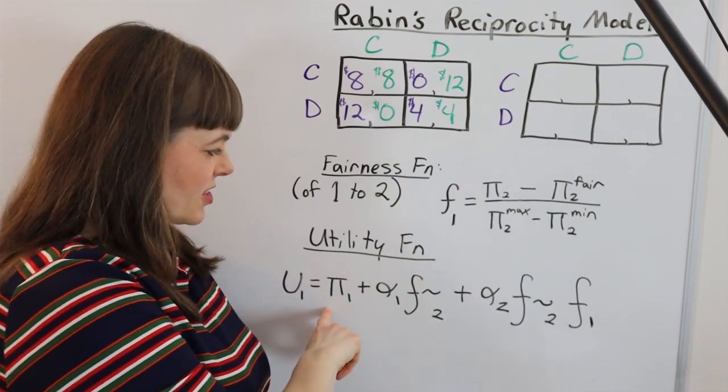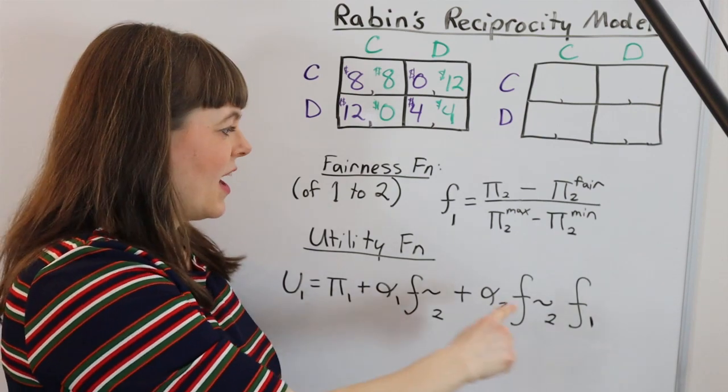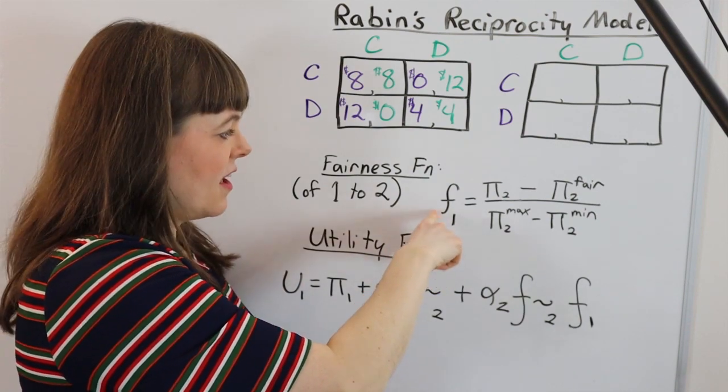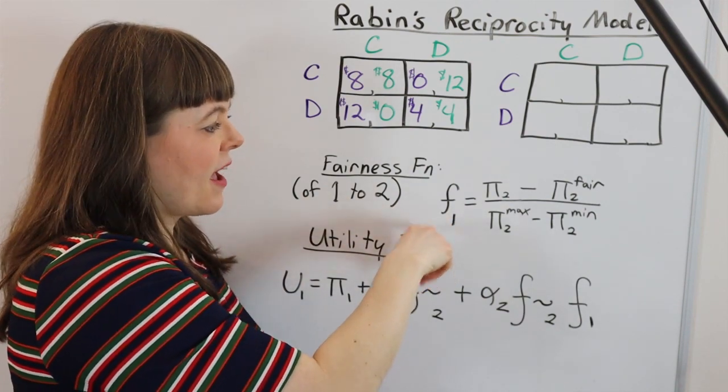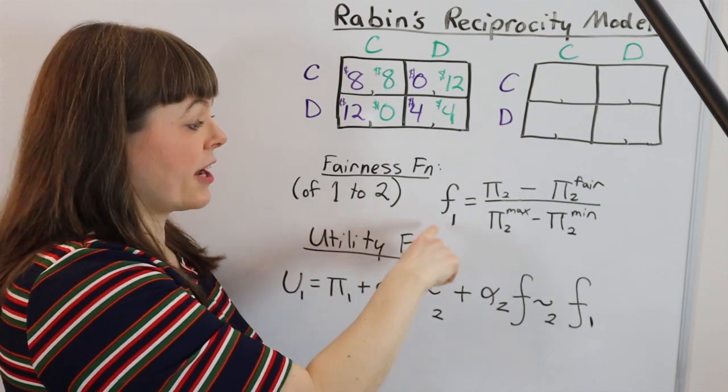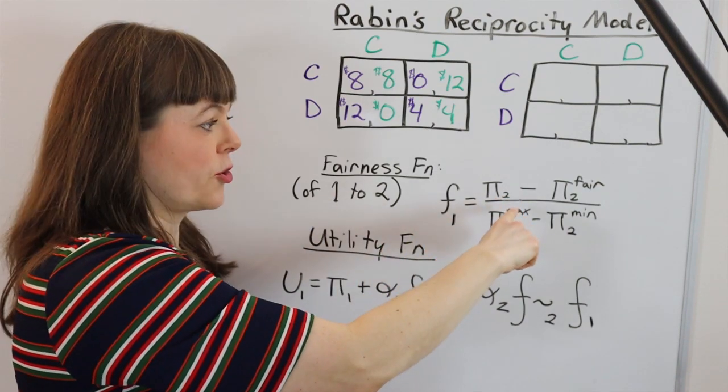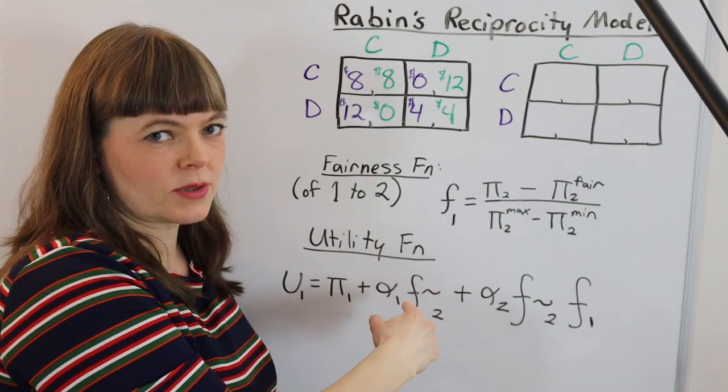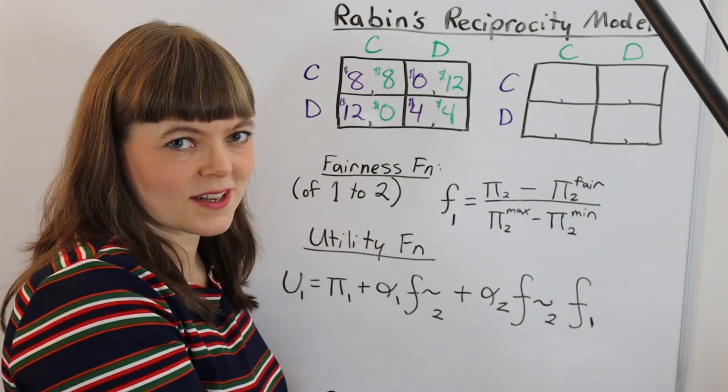So let's first just label the utility function. And the key feature here is that we have a fairness function, and the fairness function captures how fair is player one to player two.